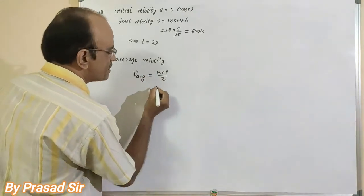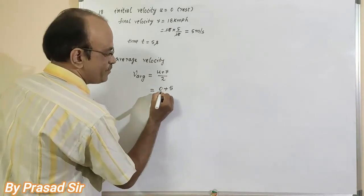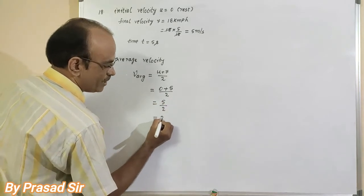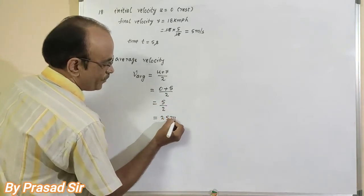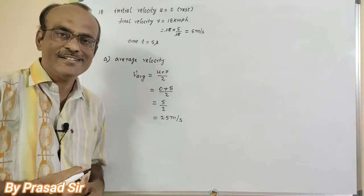So here u is 0 plus velocity 5 divided by 2. So how much we got here? 5 by 2 is equal to 2.5 meters per second. Now which one we want to calculate? Distance.